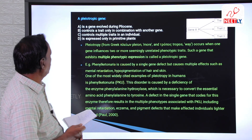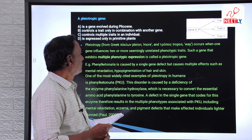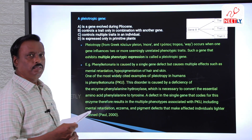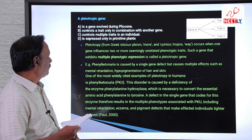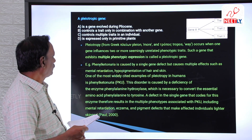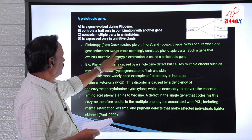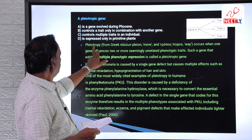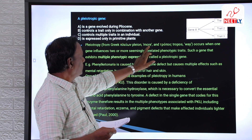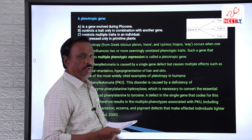This question is about the pleiotropic gene. What do we mean by pleiotropic? It is a Greek term — 'pleiotrophie' — where 'pleion' means more and 'tropia' means way.